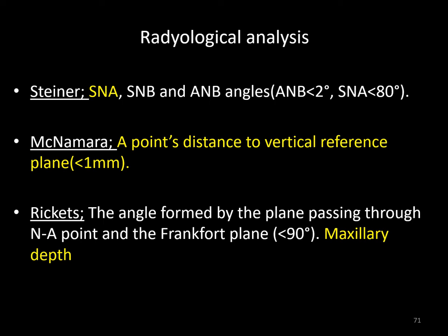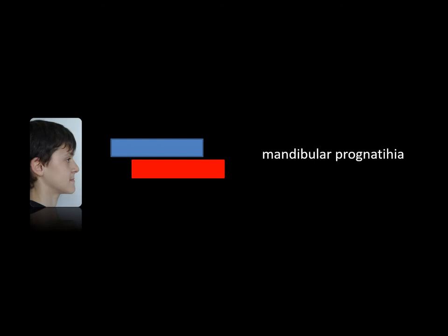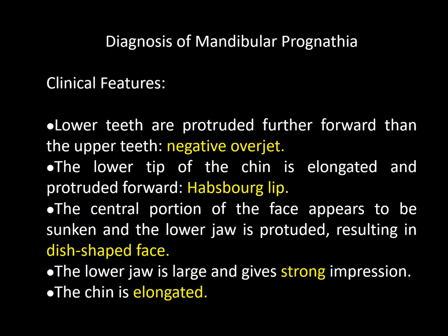Let's discuss the features of mandibular overgrowth. The clinical features of mandibular prognathia include negative overjet, Habsburg lip, concave profile, a large and strong lower jaw, and an elongated chin.